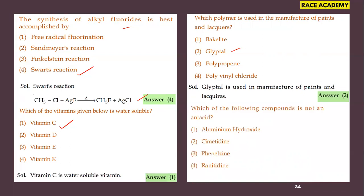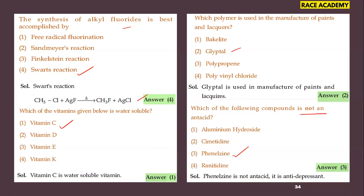Which of the following compounds is not an antacid? The options are aluminium hydroxide, cimetidine, phenelzine, and ranitidine. Phenelzine is not an antacid — it is an antidepressant. So the third option is the answer to 'which is not an antacid.'